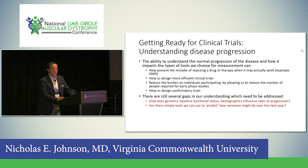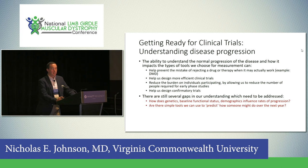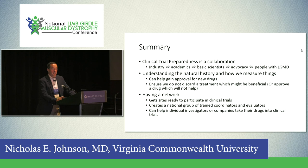In summary, clinical trial preparedness is a collaboration — with all of you, with the patient organizations putting this together, with colleagues on the basic science side developing new therapies, with us on the academic side preparing for clinical trials, and with colleagues in industry steering new therapies to approval. Understanding natural history and how we measure things is not as exciting as being exposed to a new gene replacement therapy, but it's an important and essential step. We feel a great deal of urgency to get that work done so new therapies have every chance to succeed.